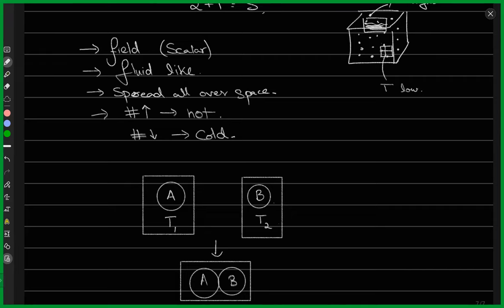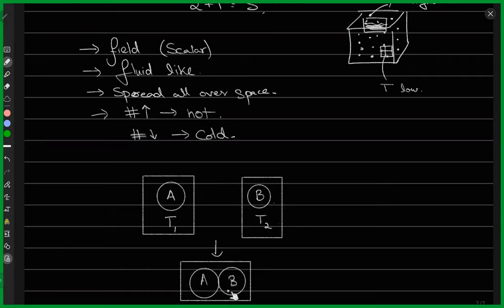Let's suppose I have a body A and another body B. Suppose they are at two different temperatures, T1 and T2. Now, what would happen if I bring these two bodies in contact with each other? At first they're completely isolated — no interaction between A and B. But now they're interacting, touching each other. What would you expect to happen in terms of temperature?